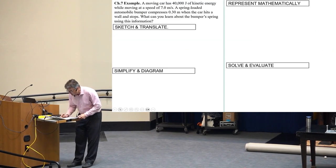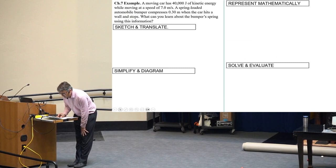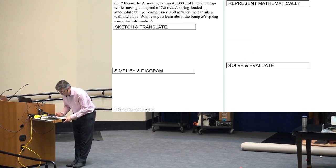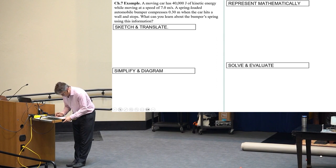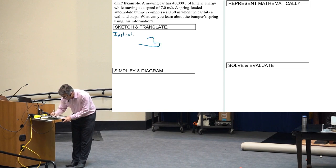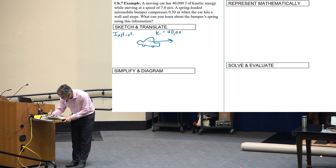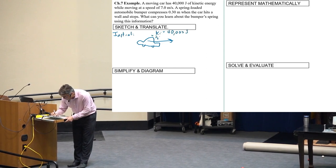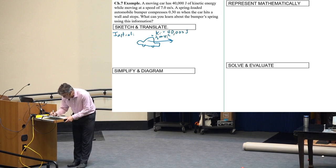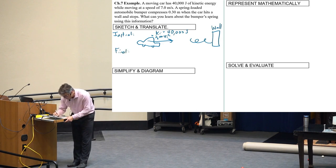So let's do an example. A moving car has 40,000 joules of kinetic energy. And it's moving at a speed of seven meters per second. A spring-loaded automobile bumper compresses three meters when the car hits a wall and stops. What can you learn about the bumper's spring using this information? So I think it's going to be the spring constant, but let's just draw it. So what you are doing here is you have a car. It's going with some K initial. It's 40,000 joules. And that's equal to 1/2 m V initial squared. So I guess you can probably figure out what the mass is of the car. Then there's a wall and a spring. I don't know if the spring's attached to the car or attached to the wall. But anyway, there's a spring there.